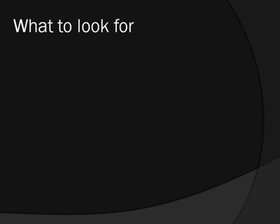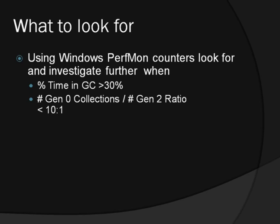We're going to look at the kinds of things you could look for to initially identify if you're having some kind of memory problem. You could use the Windows Performance Monitor counters to look for problems, which you could then investigate further using tools. One of the most interesting statistics is the percentage time in GC — the percentage of time the application is spending in the garbage collector. If this is greater than 30%, this is definitely worth looking at, examining temporary object allocation and maybe even RAM footprint.